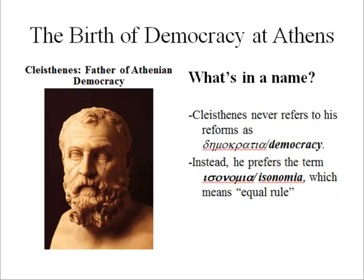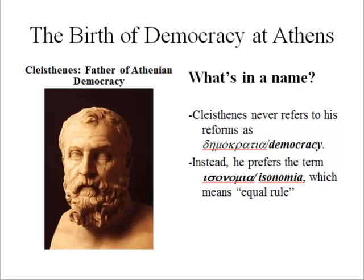But what's in a name? Cleisthenes never actually referred to his reforms as demokratia, or democracy. This was a pretty loaded term in Athens at the time — demos didn't just mean people, it also had the connotation of rabble or scum. Instead, he preferred the term isonomia, which means equal rule. So people were equally in charge of their fates in this new system. It's this new system of government that will give birth to the art we're going to talk about in the next lecture on Aeschylus' Eumenides. Stay tuned.